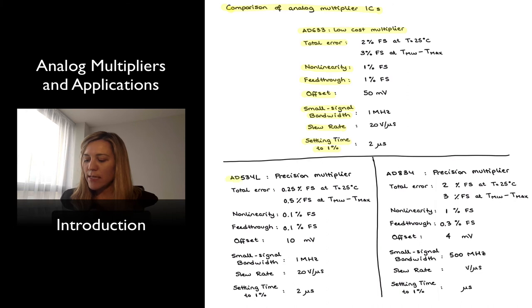In contrast, we can take a look at the AD534L, which is a precision multiplier. It has a total error of 0.25% of full-scale at the nominal temperature of 25 degrees C, or 0.5% of full-scale at the overall temperature range. So much improved with respect to the 633. Non-linearity is also 10 times better than the 633, as well as feed-through. And the offset is 10 millivolts, so one-fifth of the maximum offset for the 633.